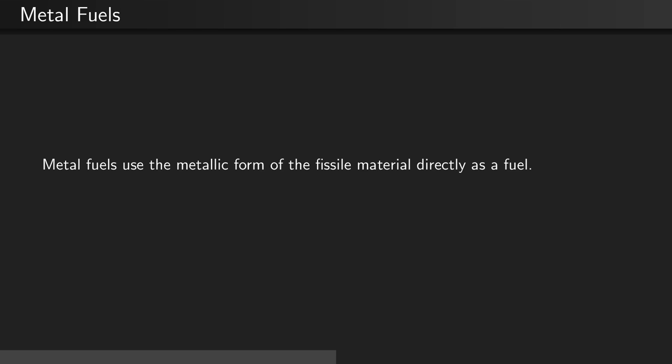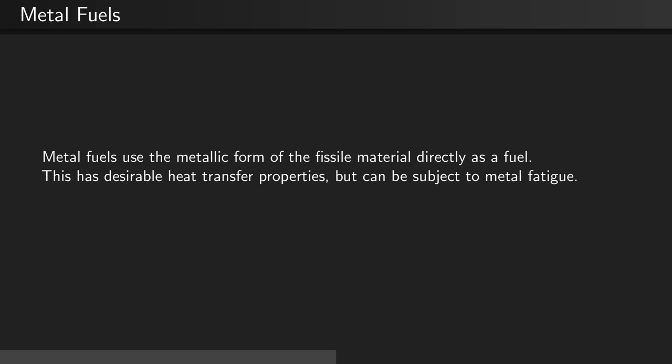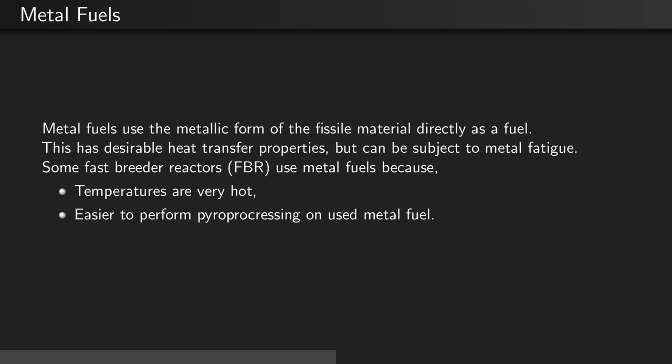Metal fuels use the metallic form of the fissile material directly as a fuel. This has desirable heat transfer properties but can be subject to metal fatigue. Some fast breeder reactors use metal fuels because the temperatures are very hot and it is easier to perform pyroprocessing on used metal fuel, allowing the fast burner reactors to do inline reprocessing.